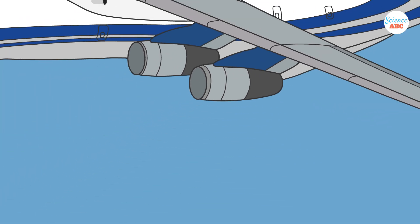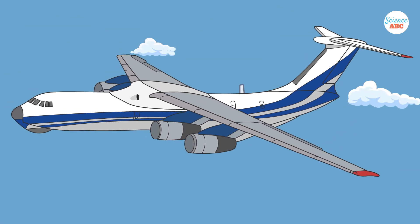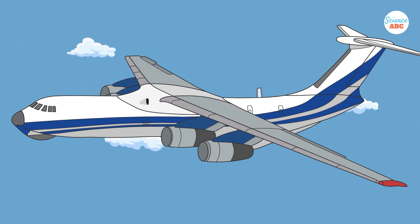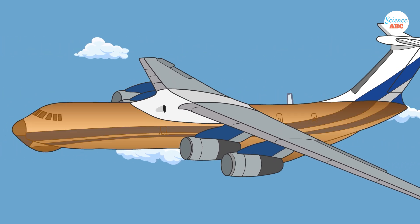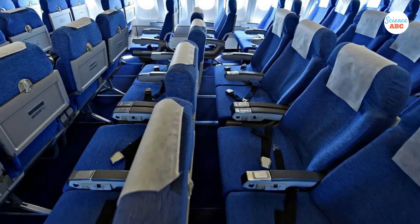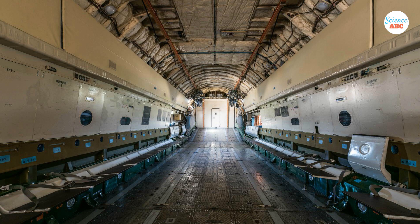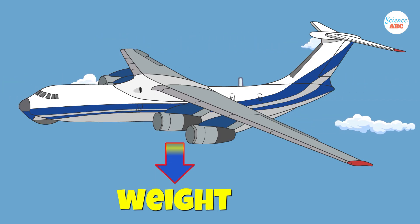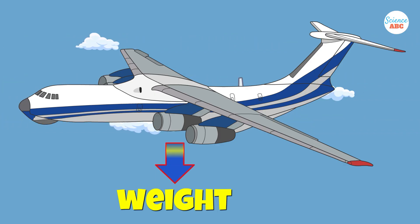Consider this: an airplane is a massive metal object that can weigh anywhere from a few hundred to half a million kilograms. The airplane's fuselage, its various components, onboard systems, equipment, payload, and fuel all contribute to its overall mass, which is directly related to its weight. This weight is directed downwards, towards the center of the Earth.